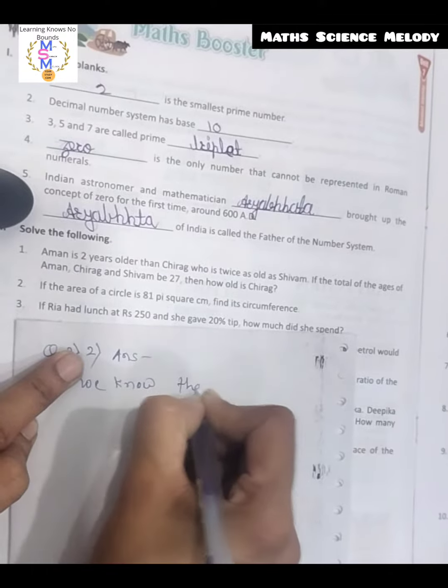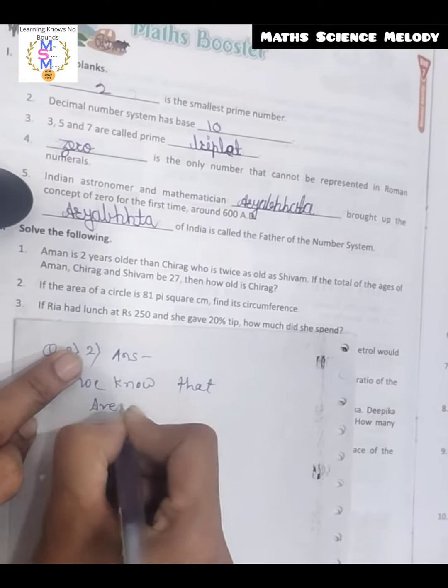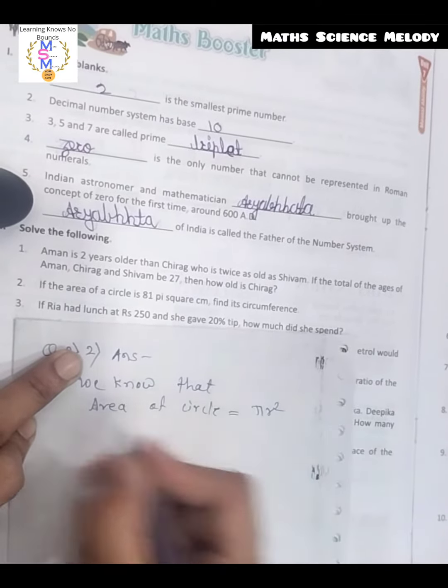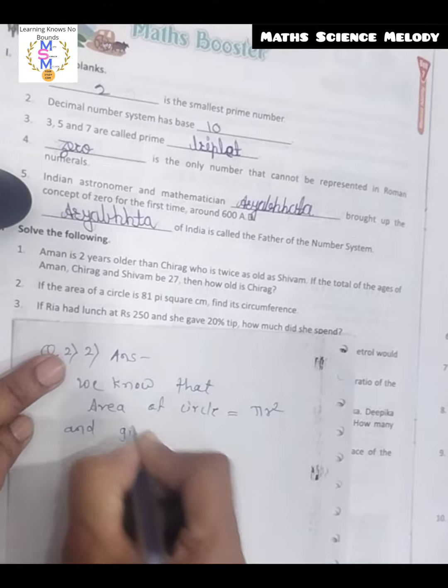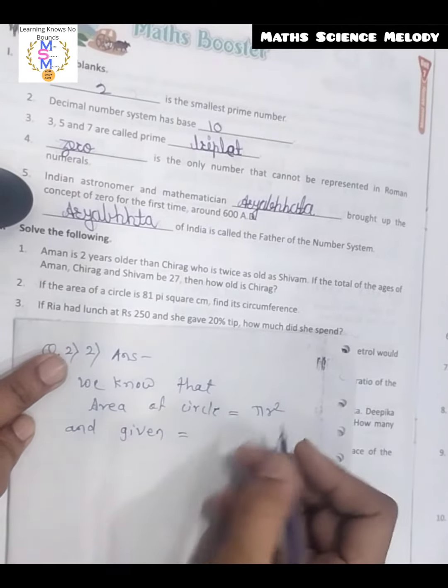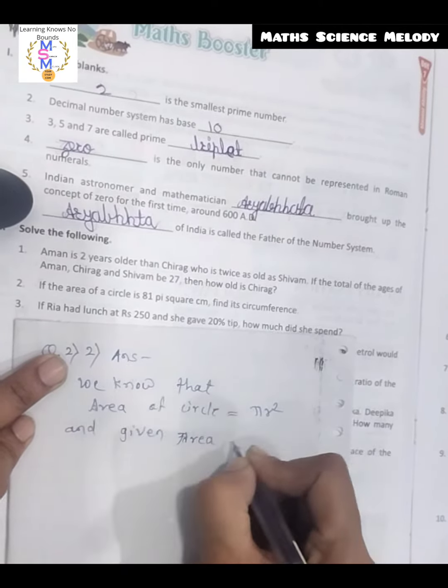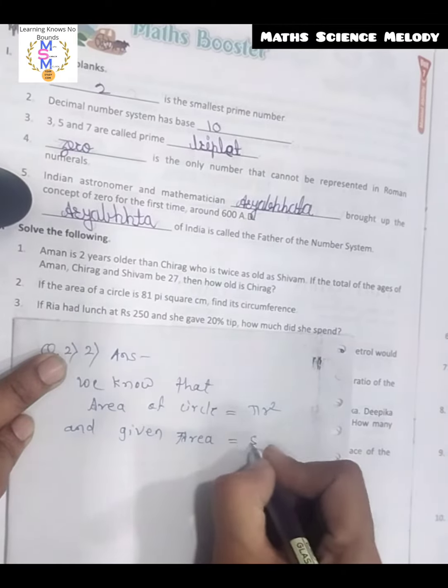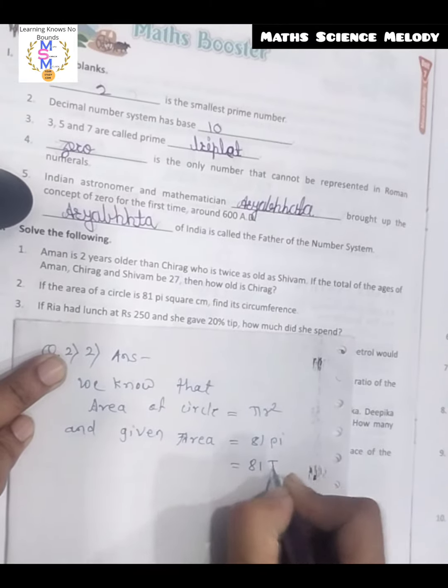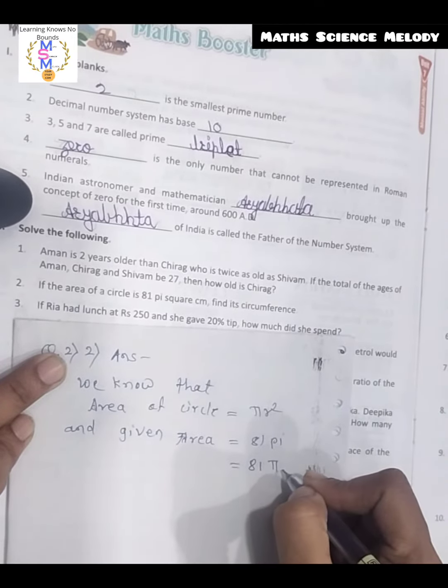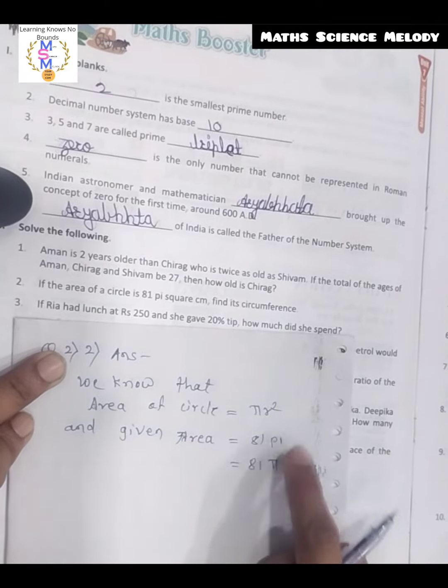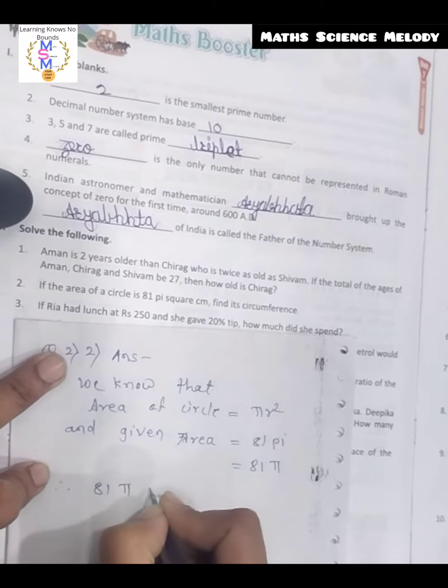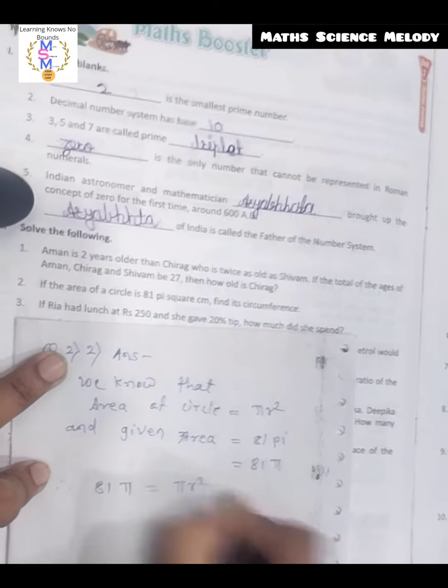As we know that area of circle equals πr², and given area of circle is 81π, which can be written as 81π. Therefore, we can write 81π = πr².